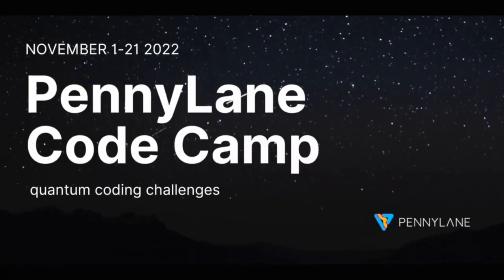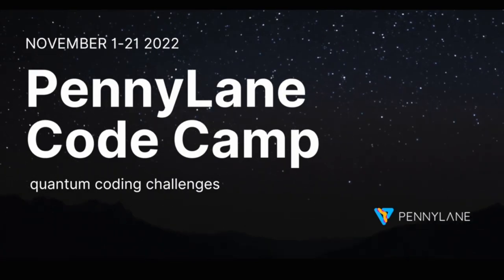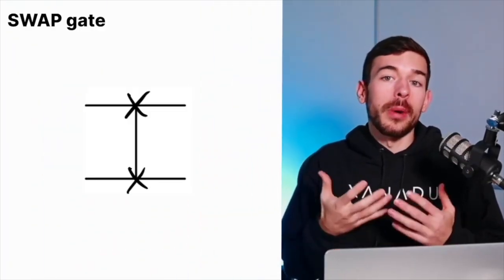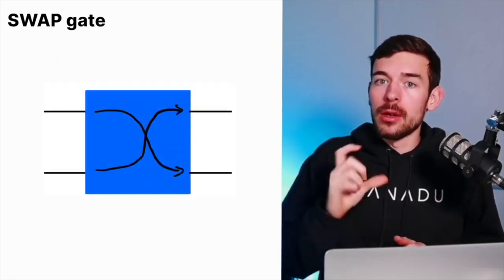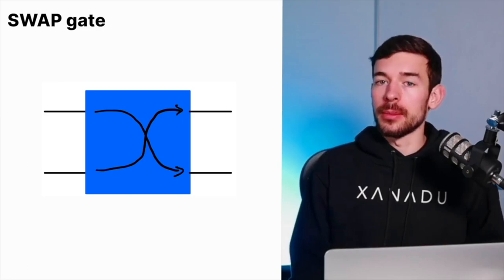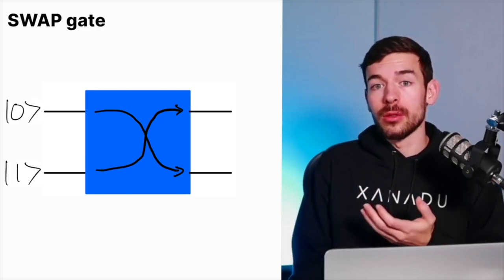Actually, the question we are going to look at today was given in the 2022 PennyLane Code Camp. It was one of the more difficult challenges, but at the end of the video you are going to see that it's something that you can solve. Probably you already know what the SWAP gate is. It's an operator that acts on two qubits and basically flips the value between them. For example, if the input is 01, the output is going to be 10.